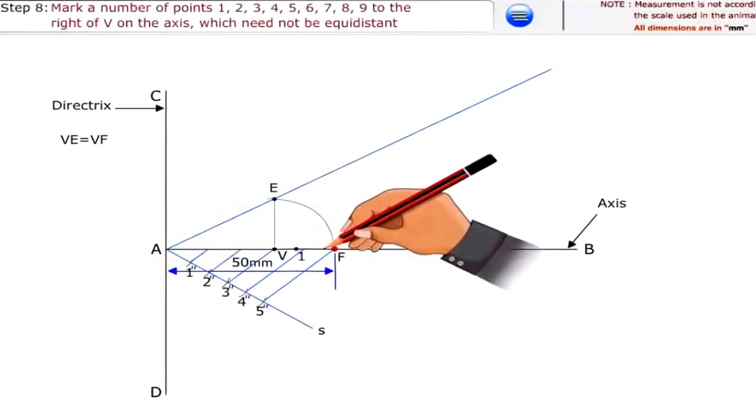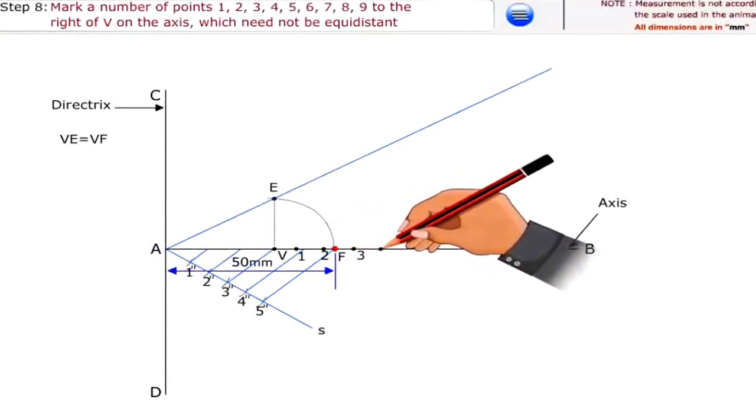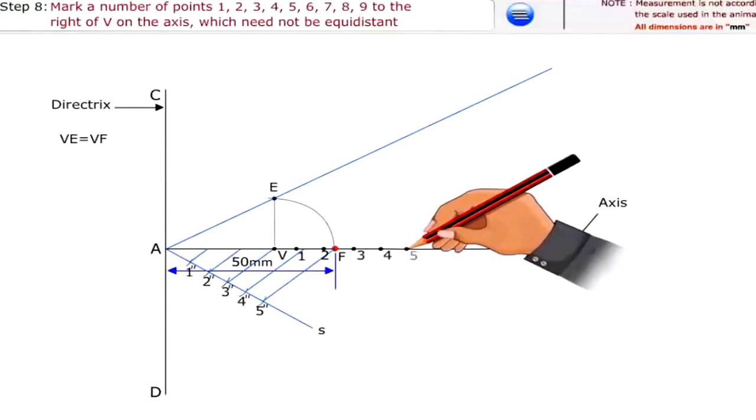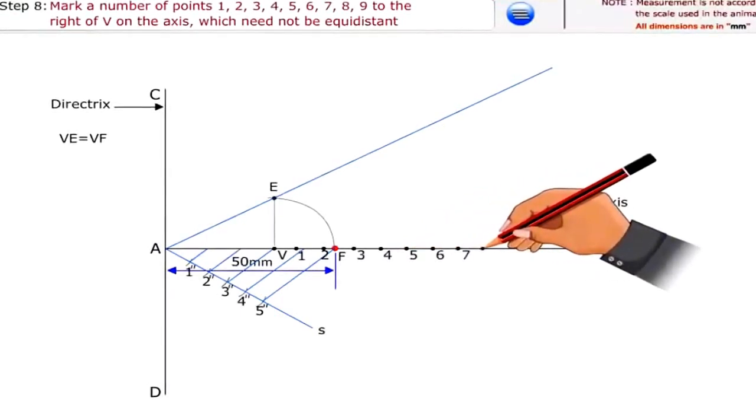Mark a number of points 1, 2, 3, 4, 5, 6, 7, 8, 9 through the right of V on the axis which need not be equidistant.